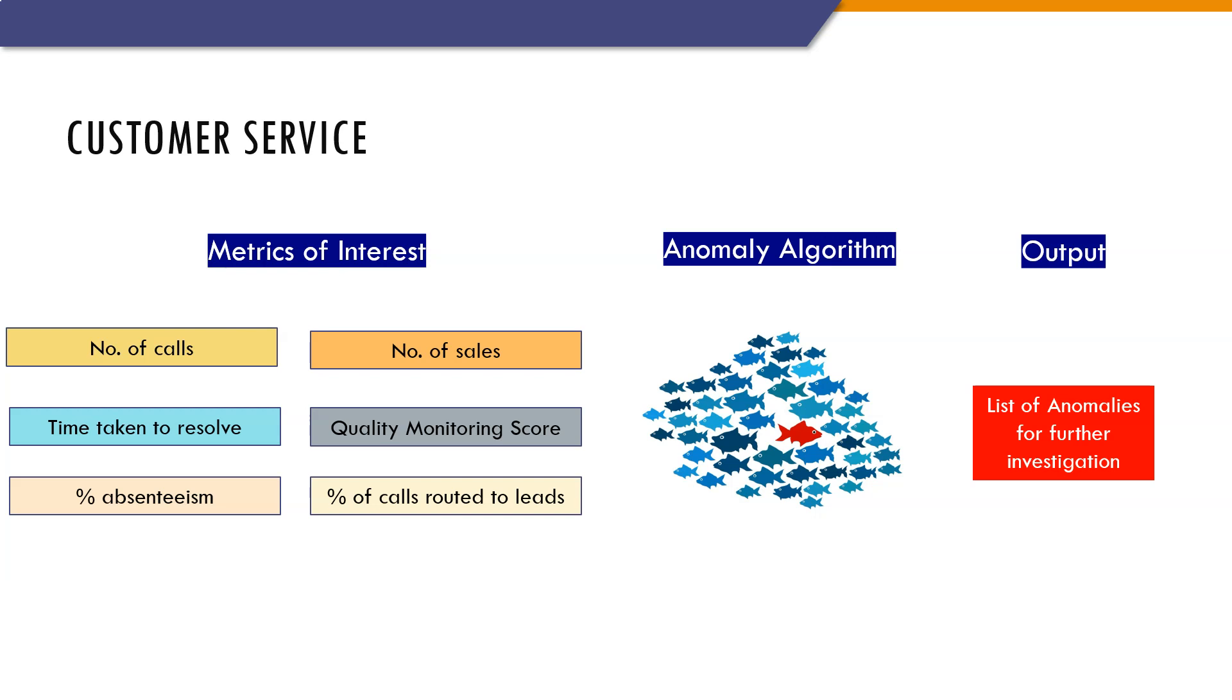I am not saying that all these anomaly points are going to result in escalations, which is why I am using the words points of interest. Go and investigate these points. You can refine the list of metrics too over a period of time to improve your forecast accuracy of escalation detection mechanism.